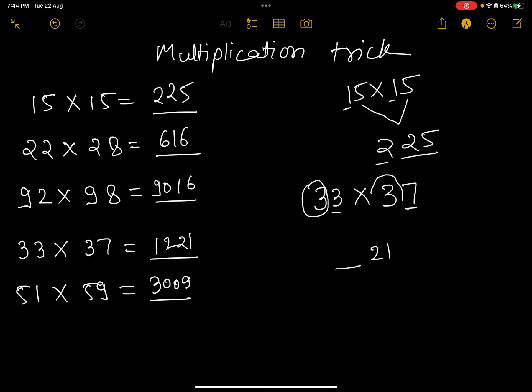So 3×4 equals 12, giving us the answer 1221. Similarly, if we multiply 51×59...